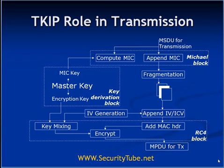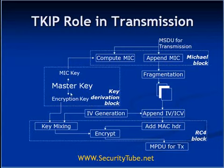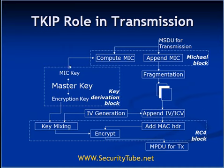Now let's go into the TKIP transmission block. The inputs are the MSDU (MAC service data unit) to be transmitted, and the master key that the client and access point have already shared. With the key derivation block, the master key, and the 4-way handshake, the MIC key (Michael key) is derived along with the encryption key and other keys such as KEK and KCK. The MIC is then computed using the MIC key and the MSDU, and that MIC is appended to the MSDU itself.